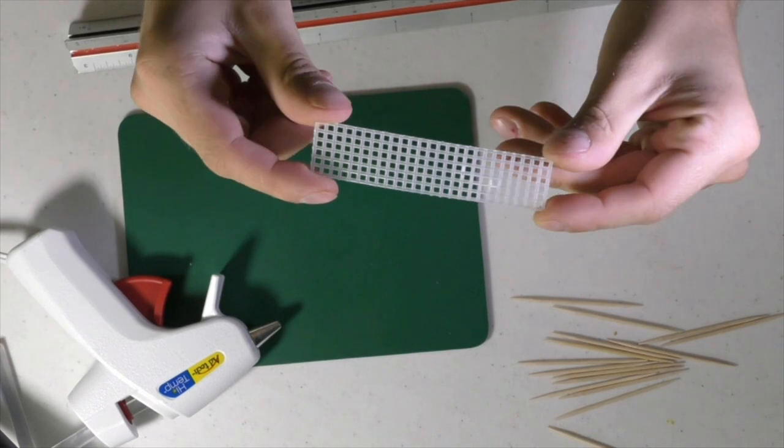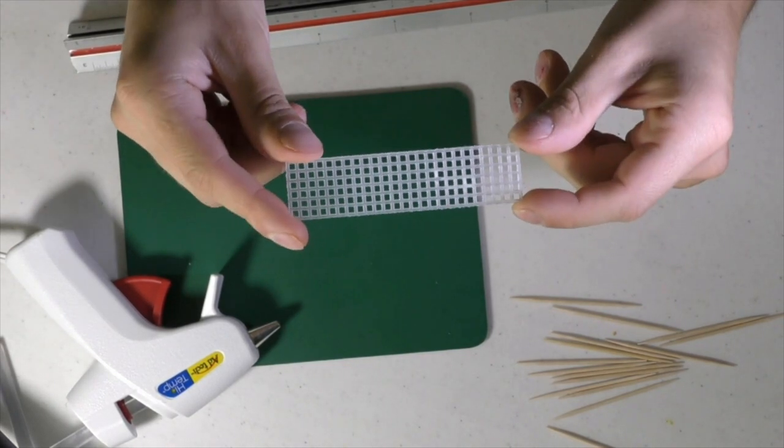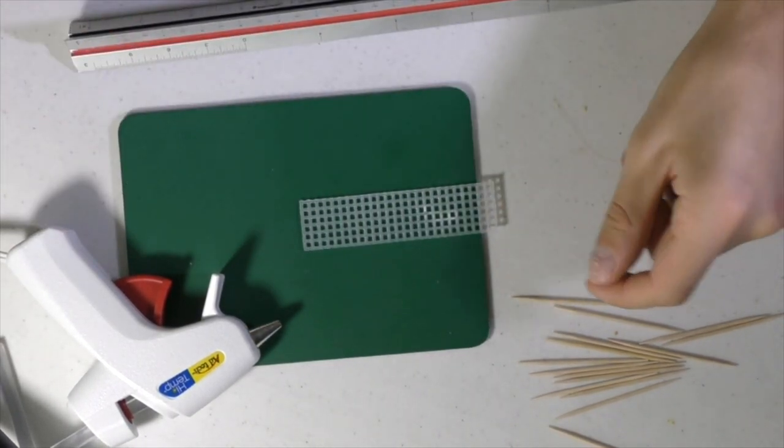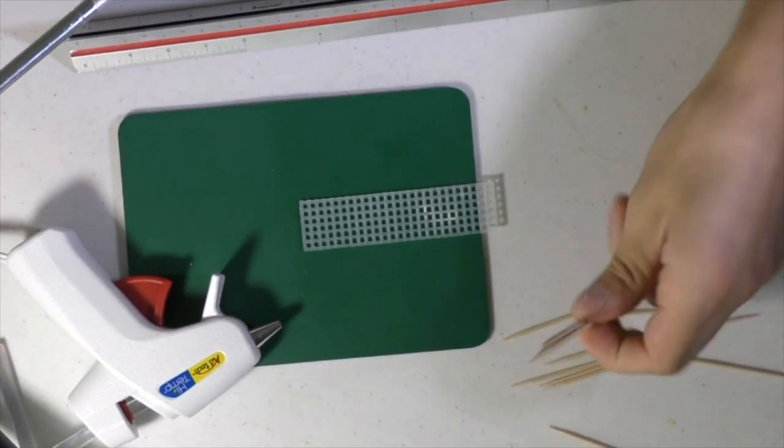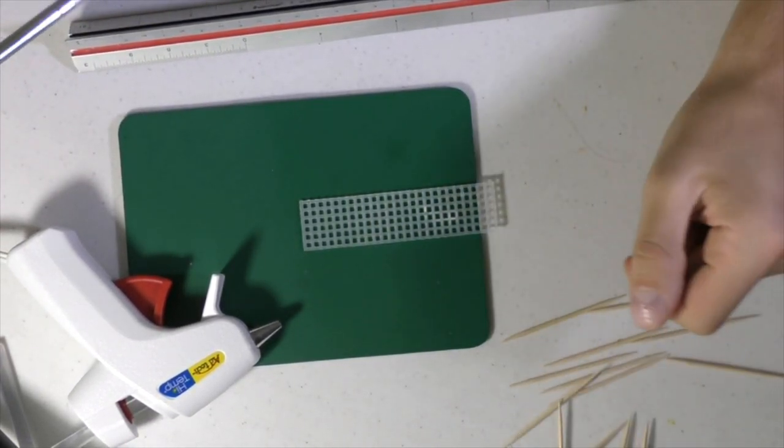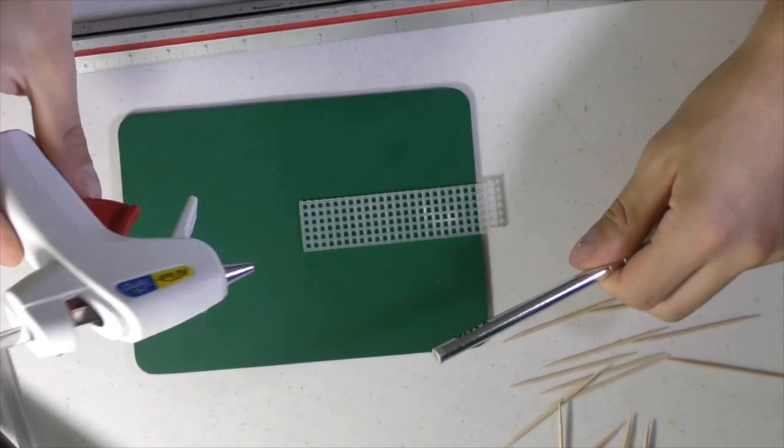This is how you can make some really easy ladders for your wargames. First, what you're going to need is some plastic mesh. You can get this out of any craft store. And then you need some toothpicks, a hot glue gun, and a knife.